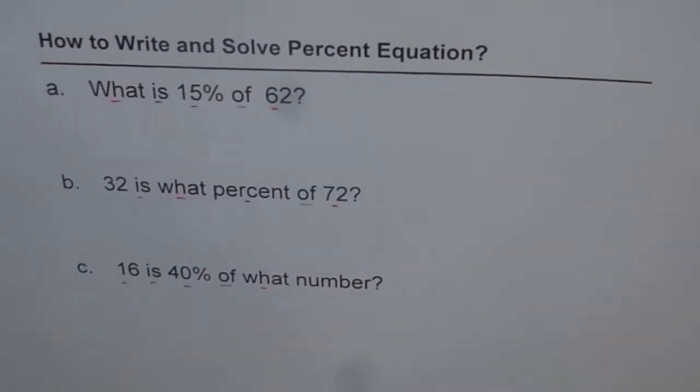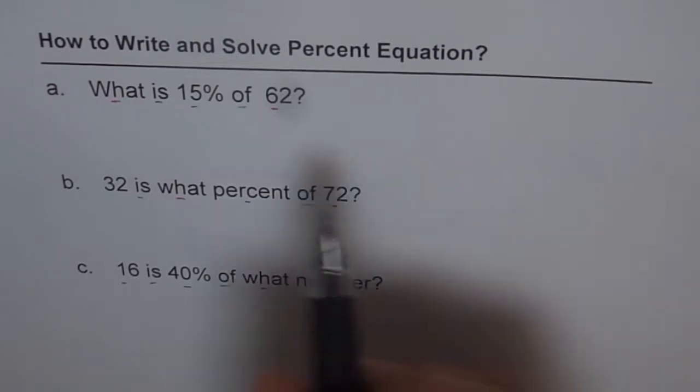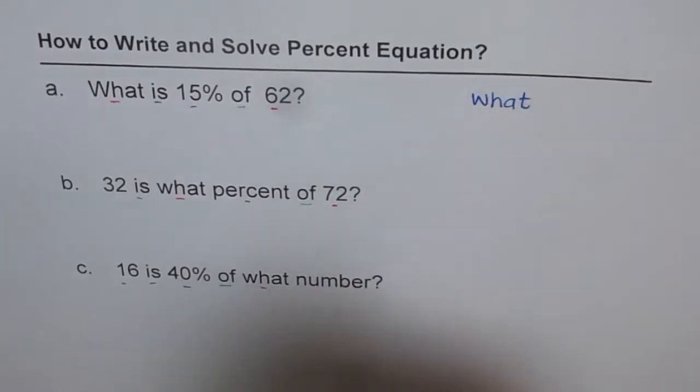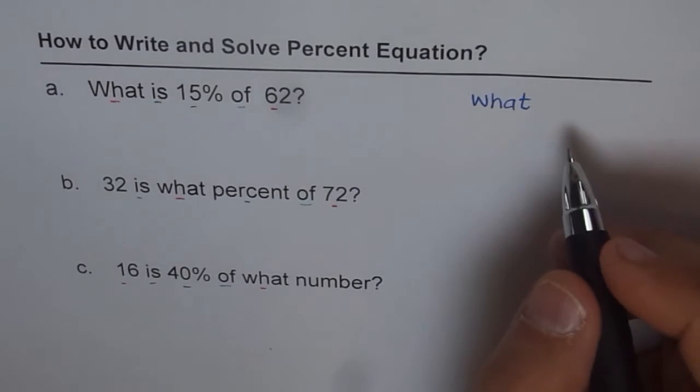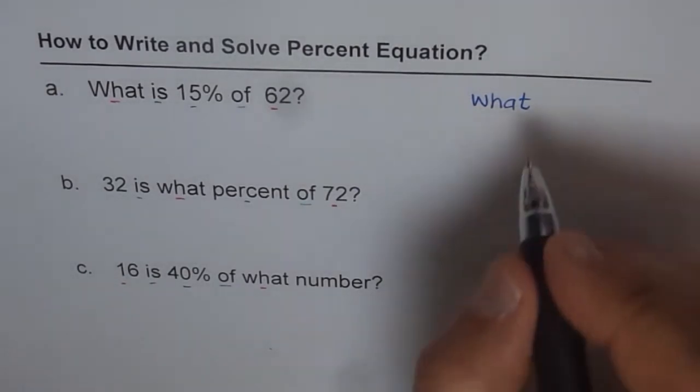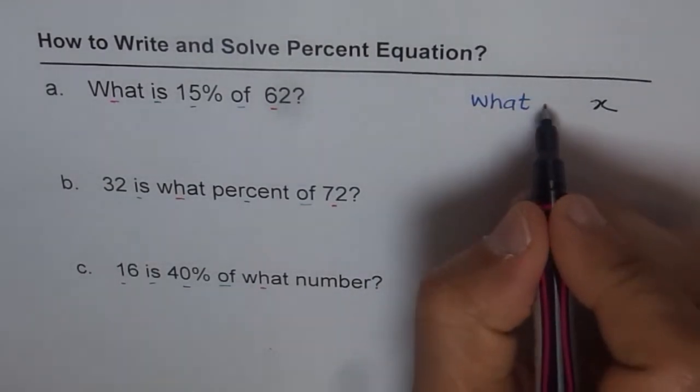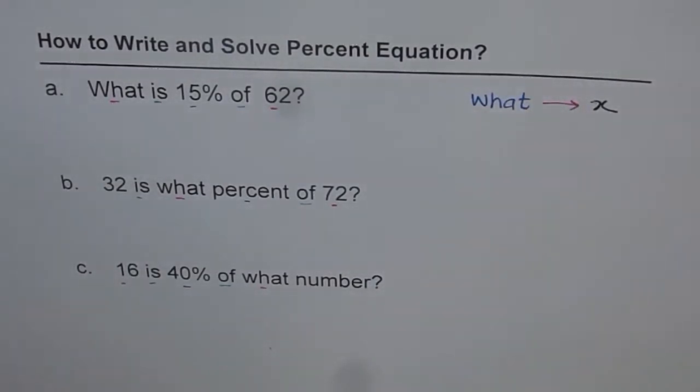Let's write down these words one by one and then see the translation. First word is what. What is something which we don't know. And whatever we don't know in mathematics, we define this to be a variable. So that goes as a variable X. That is my translation of what. What means what you want to find. I don't know, so let it be X.